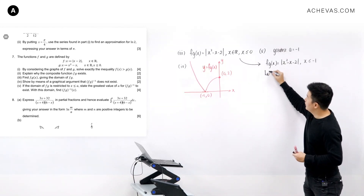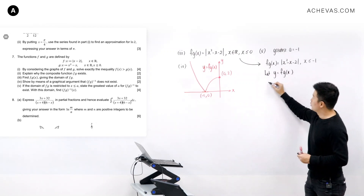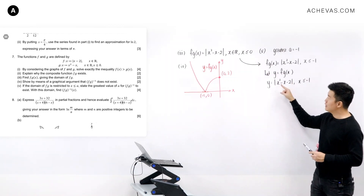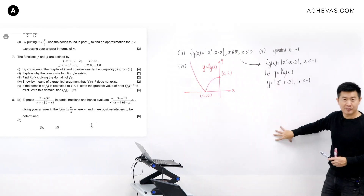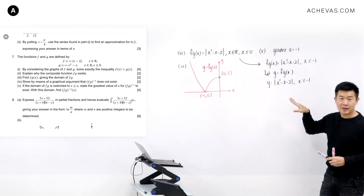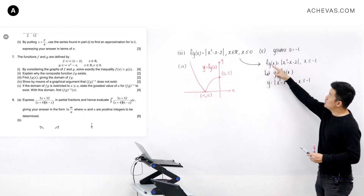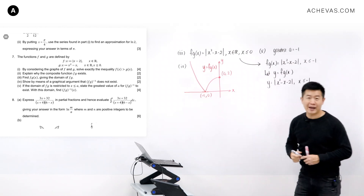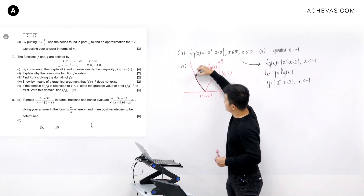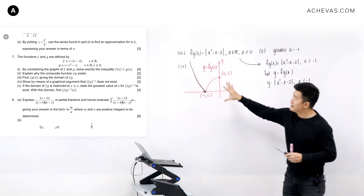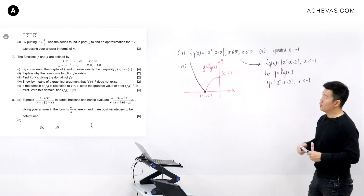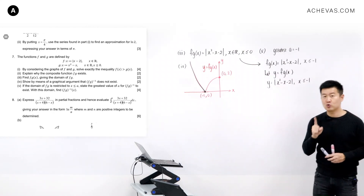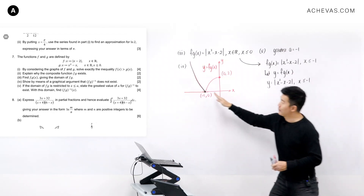We are still going to let y equal fg(x), so y equals the modulus of x squared minus x minus 2, where x is less than or equal to minus 1. But instead of algebraically removing the modulus and introducing a plus or minus y — which caused the problem — we are going to remove the modulus by referencing it to the graph. Looking at fg(x) where x is less than or equal to minus 1, we are working on a specific portion of the previously drawn graph.